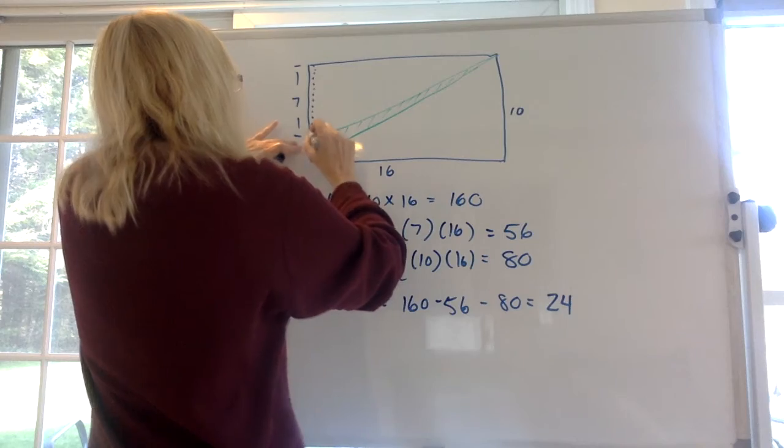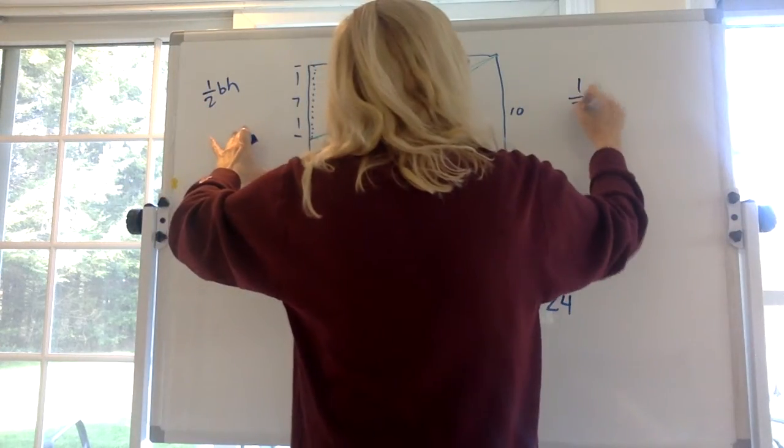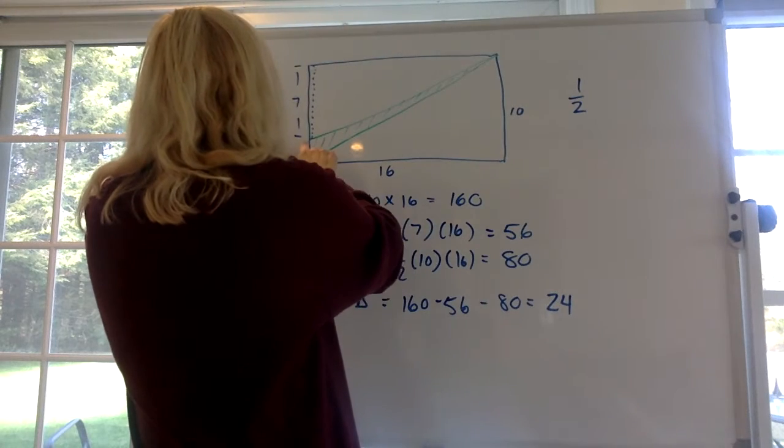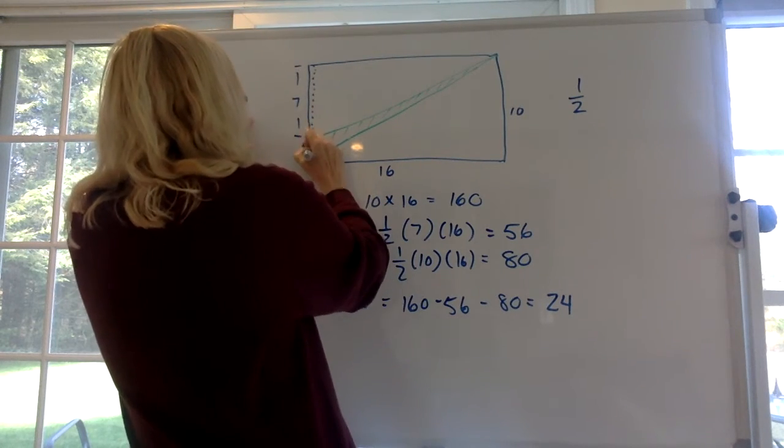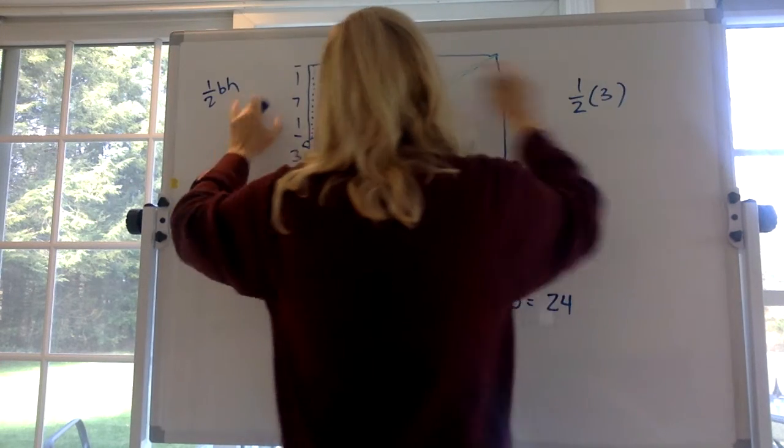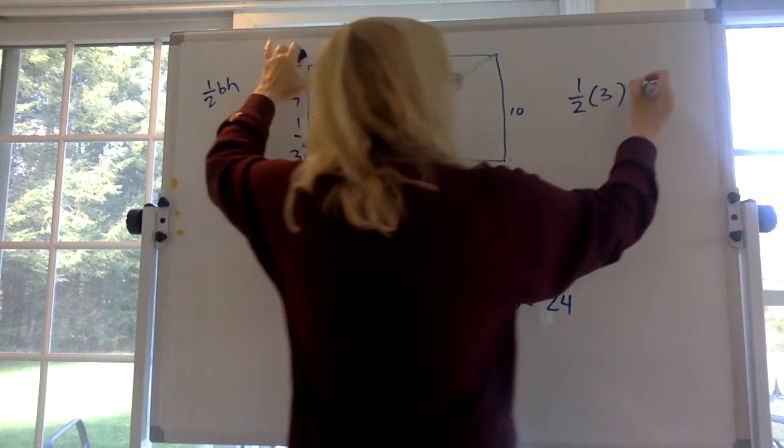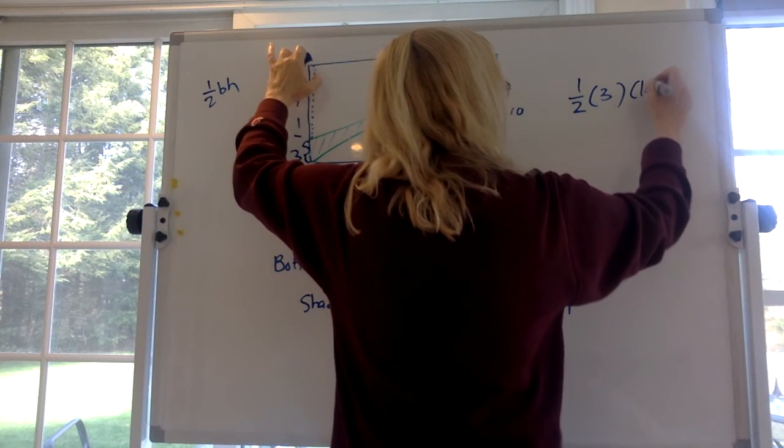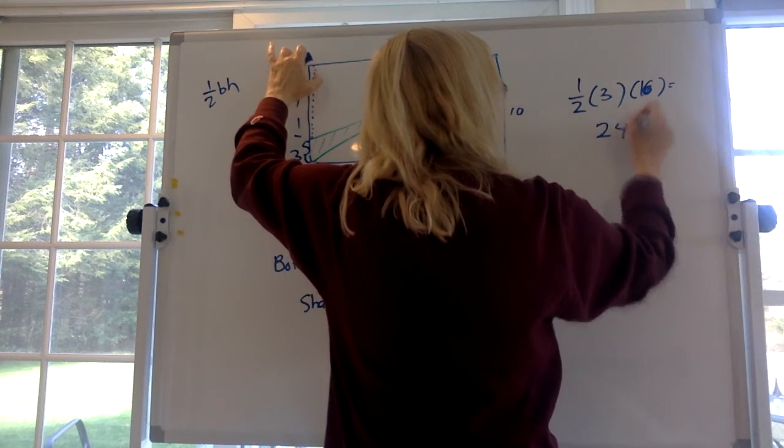So the formula is 1/2 base times height. We know from here to here is 10, and from here to here is 7, so that's 3. That's the base. And the height is the distance from the extension to the other vertex, 16. So guess what? That's 1/2 times 3 times 16. That's also 24 square units.